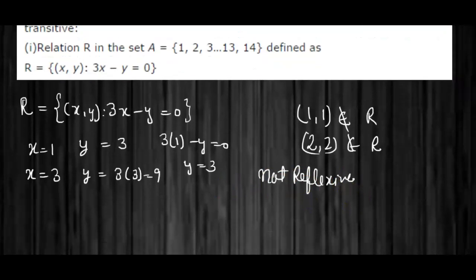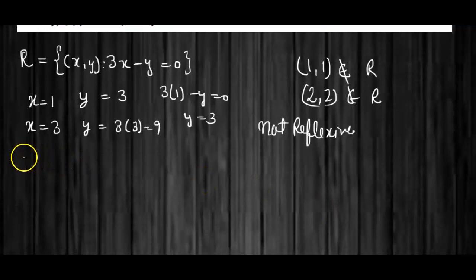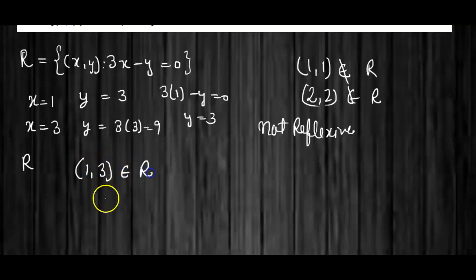For symmetry: (1,3) belongs to R. But when x = 3, y = 9, so (3,1) is not in R. Therefore, it is not symmetric.